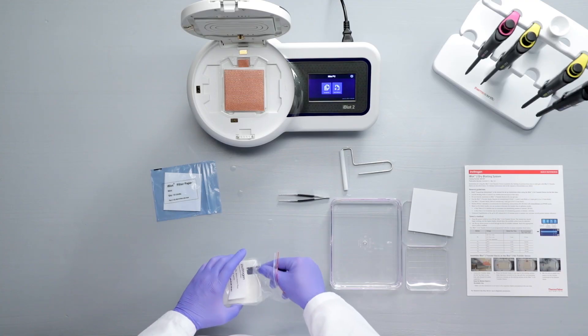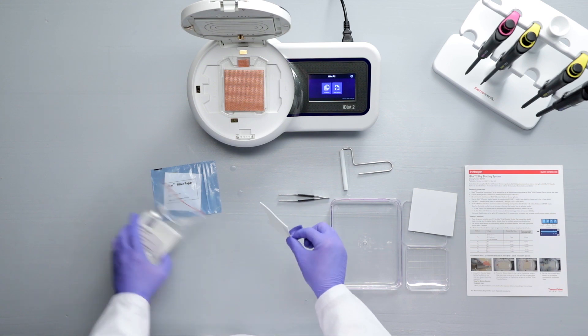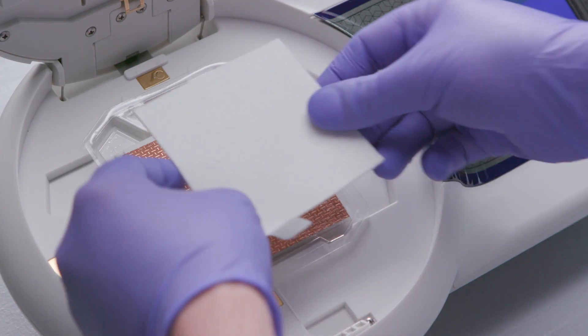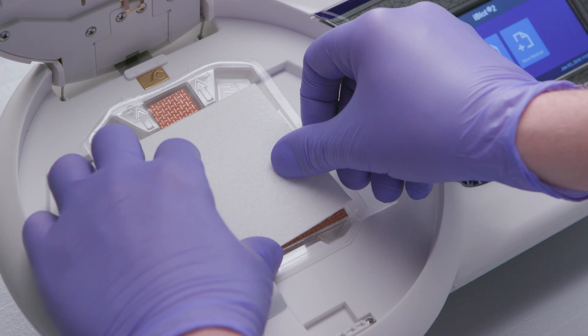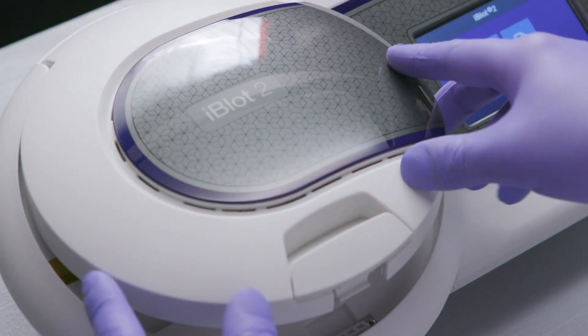Place the absorbent pad on top of the top stack. Again, be sure that the electrical contacts are aligned with the corresponding contacts on the blotting surface. Then, close the lid.